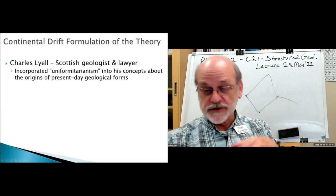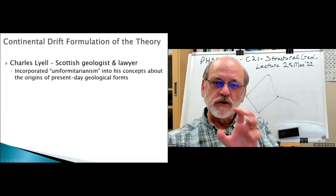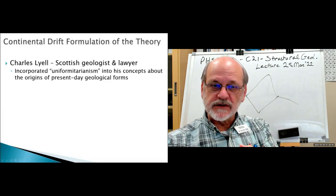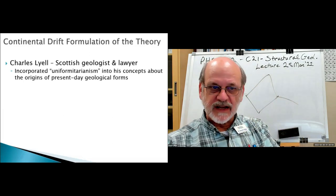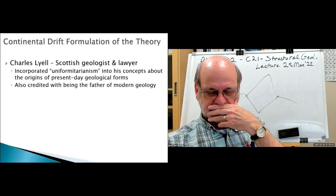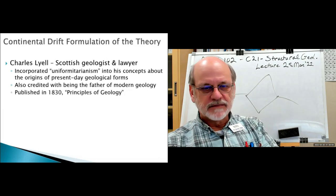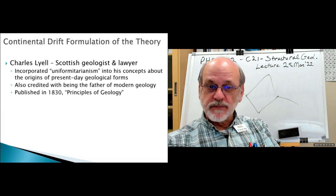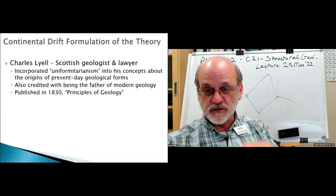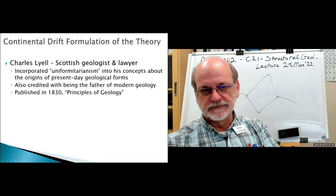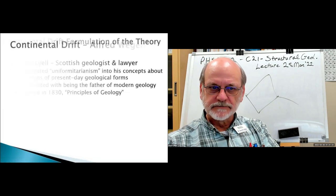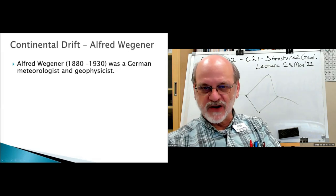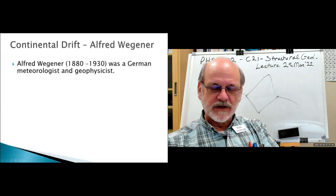Charles Lyell, another Scotsman, took uniformitarianism as proposed by Hutton and incorporated it into his concepts about the origins of the geological forms we see today. Some even consider him to be the father of modern geology. Lyell produced a rather lengthy treatise, Principles of Geology, which might be considered a textbook, in 1830. But it wasn't until Alfred Wegener — a German meteorologist who was also a geophysicist — proposed that what they were seeing in this jigsaw arrangement was actually a movement of the continents.